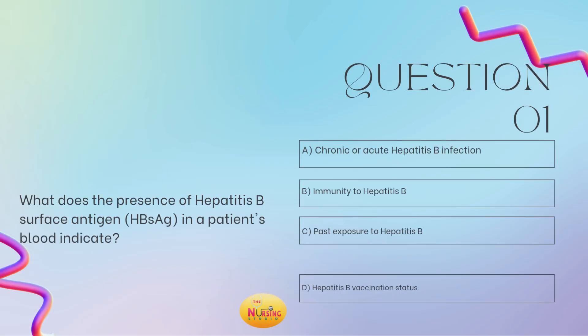Question number one states: what does the presence of a hepatitis B surface antigen — your HBsAg — in a patient's blood indicate? Is it A, chronic or acute hepatitis B infection; B, immunity to hepatitis B; C, post-exposure to hepatitis B; or D, hepatitis B vaccination status? Take a moment and tell me what you got in the comments. I always recommend reading the stem of the question first, as it allows you to slow down to ensure you're answering what has been asked of you.